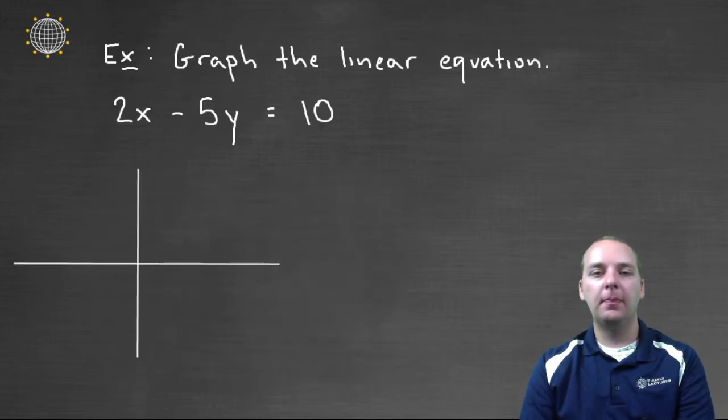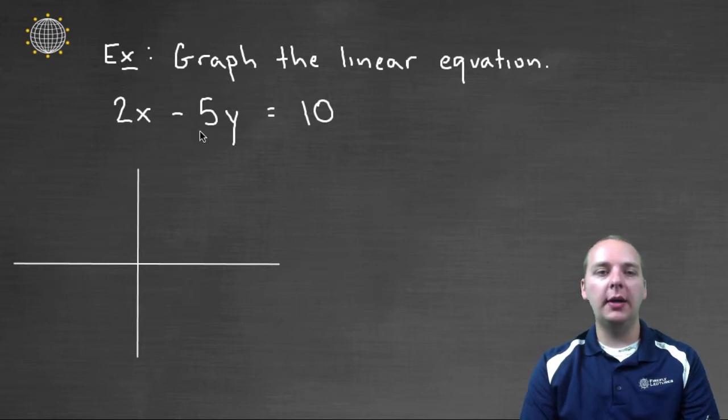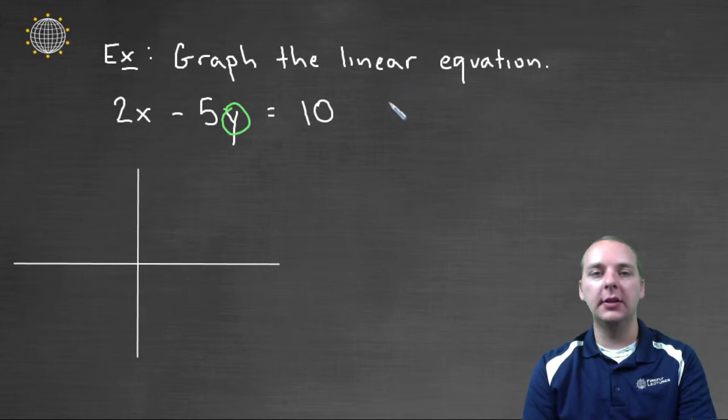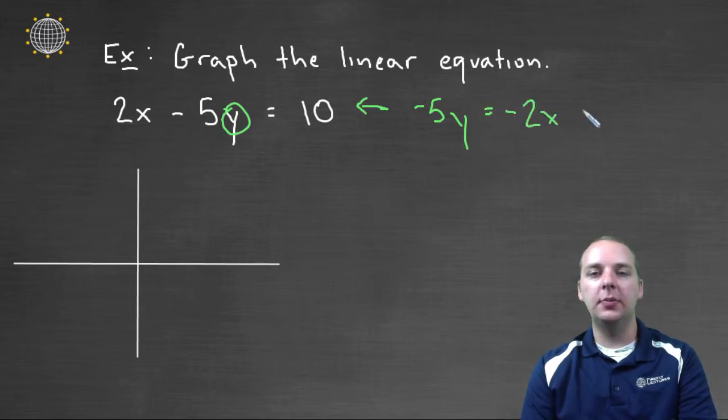Let's try another example. Let's say we had two x minus five y equals ten. This is a very common problem. This guy is not written in slope-intercept form yet. So we might have to put it in slope-intercept form by solving for y. So let's do that.